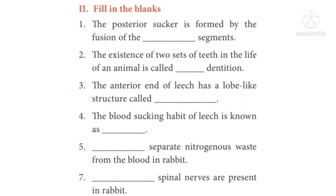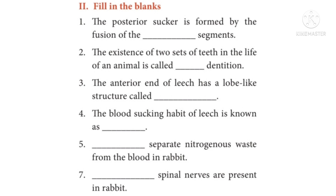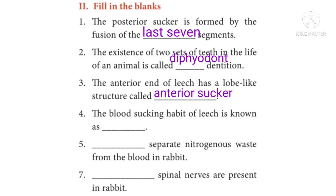Part 2: Fill in the blanks. Question 1: The posterior sucker is formed by the fusion of the last 7 segments. Question 2: The existence of two sets of teeth in the life of an animal is called diphyodont dentition. Question 3: The anterior end of leech has a lobe-like structure called the anterior sucker. Question 4: The blood-sucking habit of leech is known as sanguivorous.